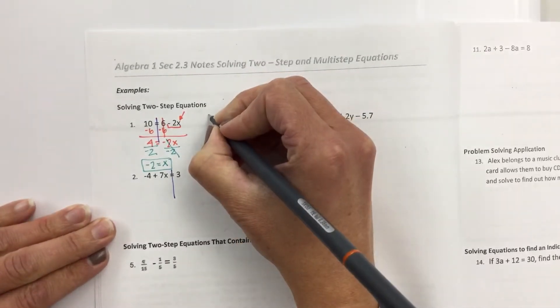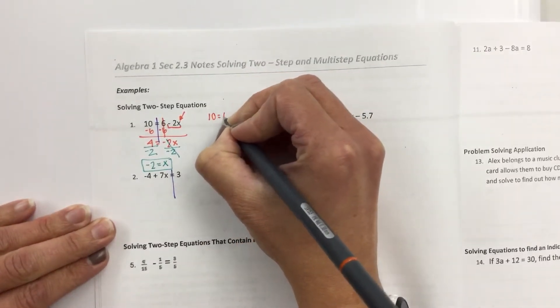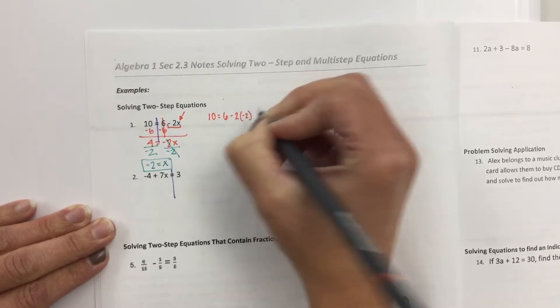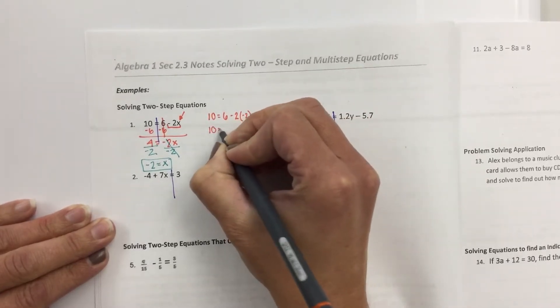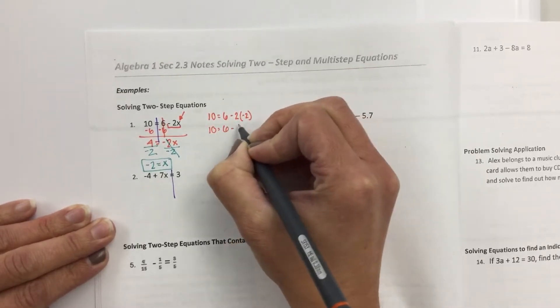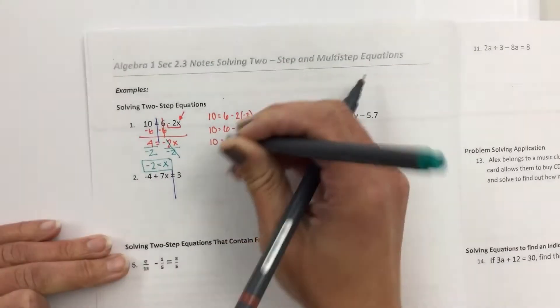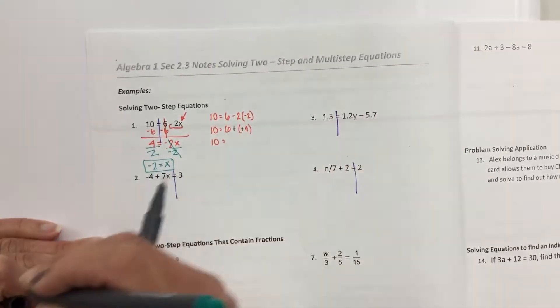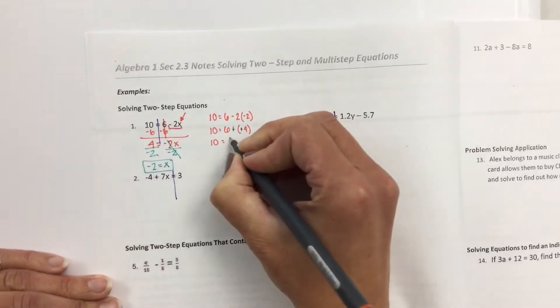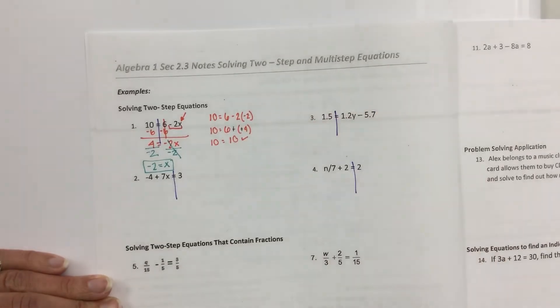You can check this the same way that we did before. So for example, 10 equals 6 minus 2 times negative 2. 10 equals 6 minus 2 times negative 2 is negative 4. Well, if you subtract a negative, you're really adding a positive. Does 10 equal 10? It does, so we did it right.